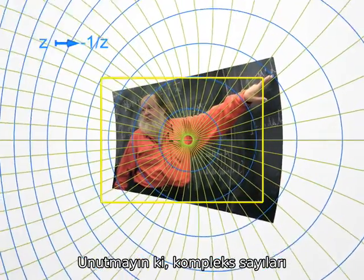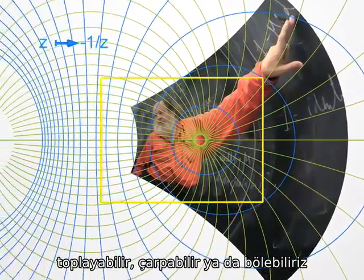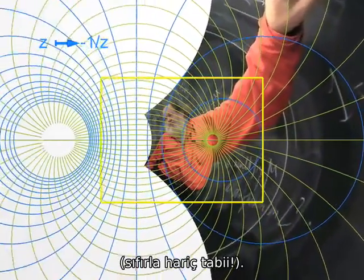Don't forget, with complex numbers one can add, multiply, but also divide. Not by zero, of course.